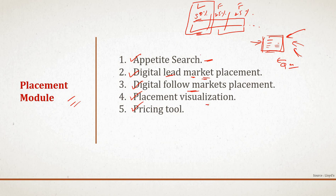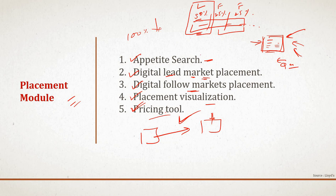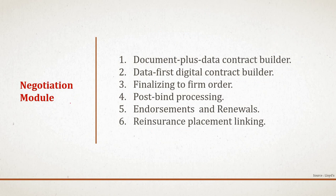The placement visualization module helps the broker see whether the placement is complete — whether 100% of the risk has been placed — and whether a sign-down needs to be done. Sign-down is a process where the broker reduces the risk proportionally for each participant when the risk is subscribed to more than 100%. The pricing tool connects market participants to third-party pricing tools; risk data flows through the platform to the pricing tool, removing the need to re-key information and providing the latest quotation and pricing.